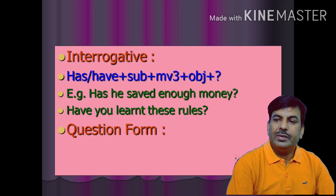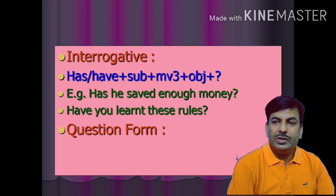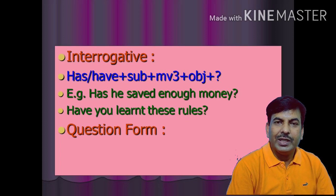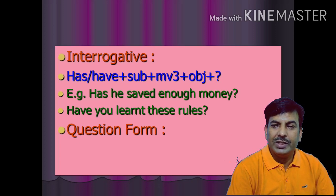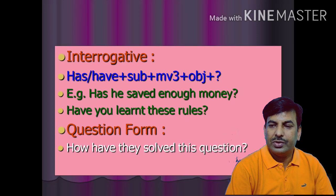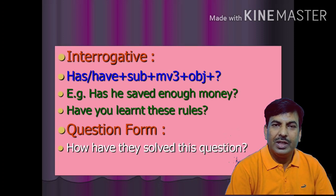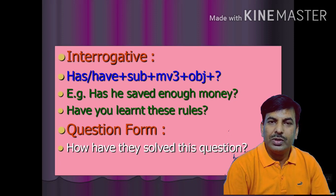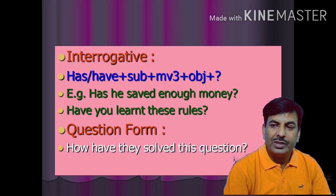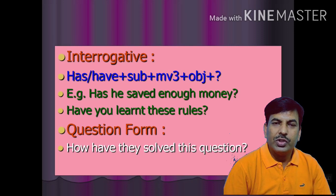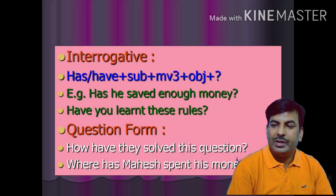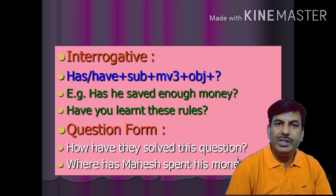Now let us have some more examples of the question word form. In this form the rule changes: first the question word, then has or have, then the subject, then the past participle, then the object, and finally a question mark. For example: 'How have they solved this question?' — how is the question word, have is the helping verb, they is the subject, solved is the past participle, and this question is the object. Another example: 'Where has Mahesh spent his money?'